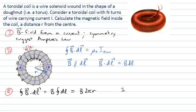So I can see that my encircled current, in this case, will simply be the number of turns I have in my toroidal coil here, multiplied by the current.